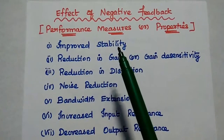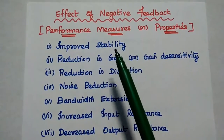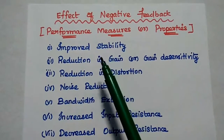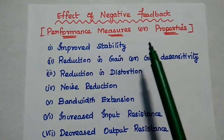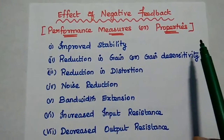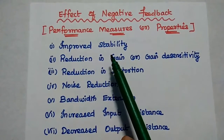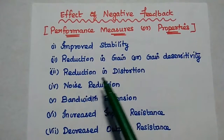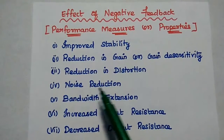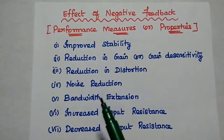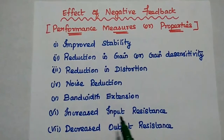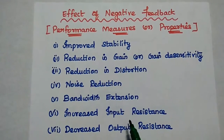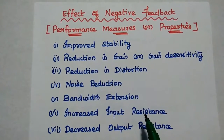Dear students, now we are going to discuss the effect of negative feedback. It is also known as performance measures or properties of negative feedback. The properties include: improved stability, reduction in gain or gain desensitivity, reduction in distortion, noise reduction, bandwidth extension, increased input resistance, and decreased output resistance.